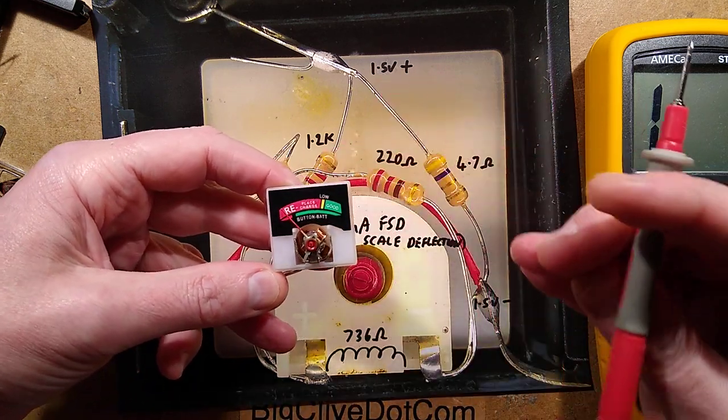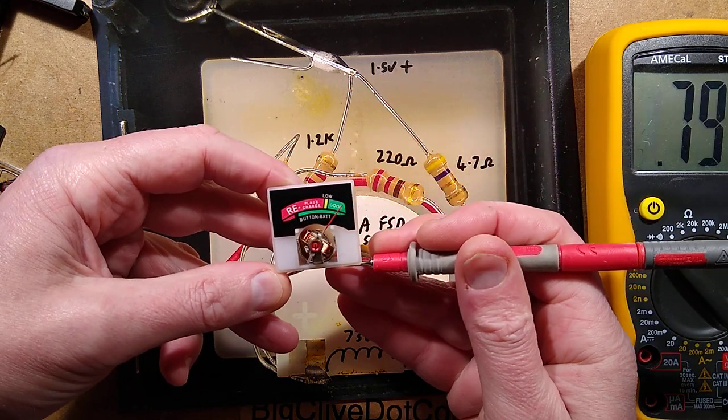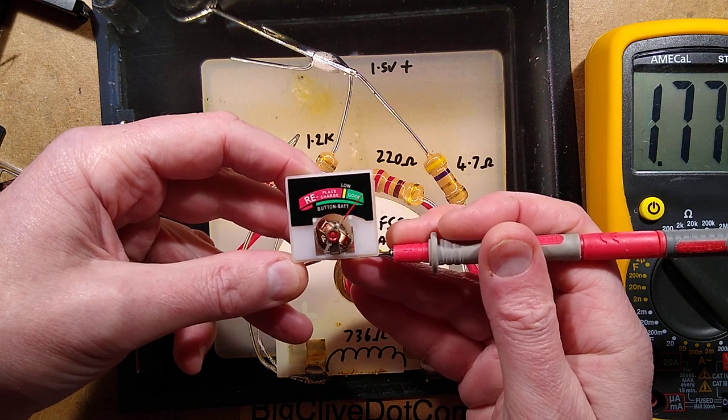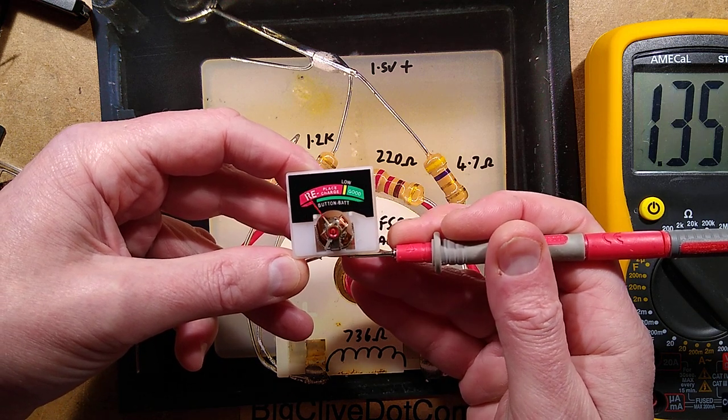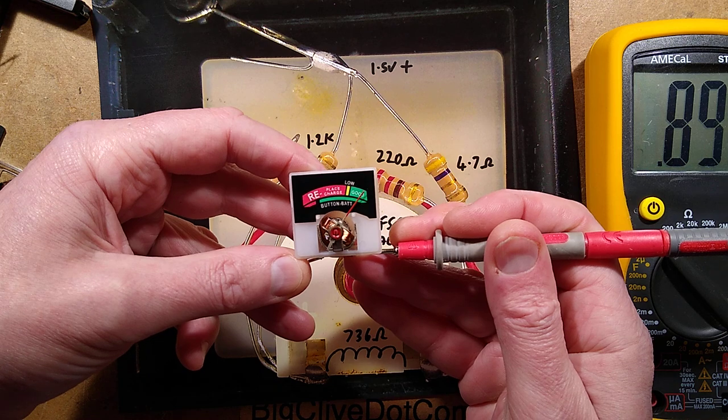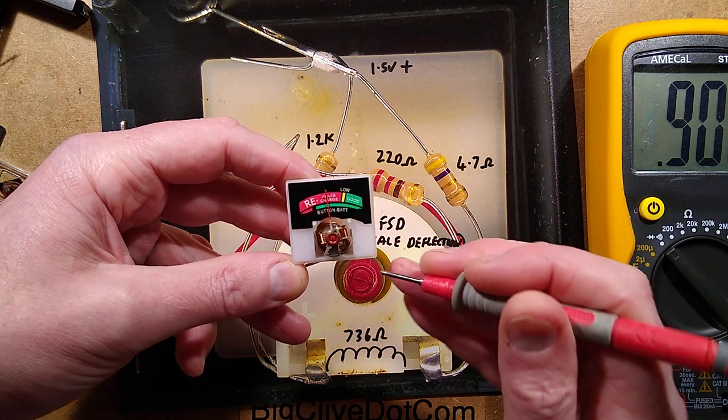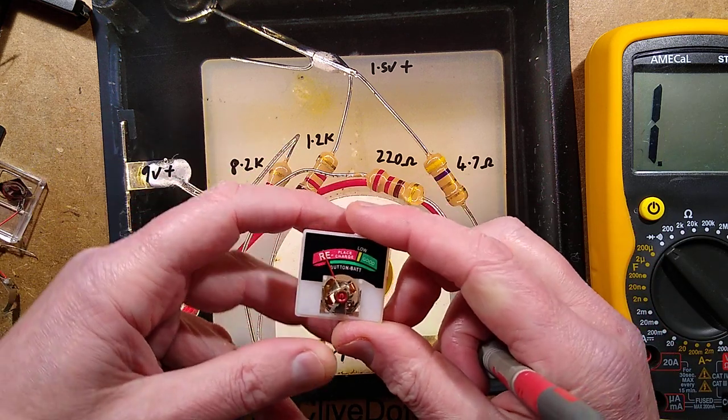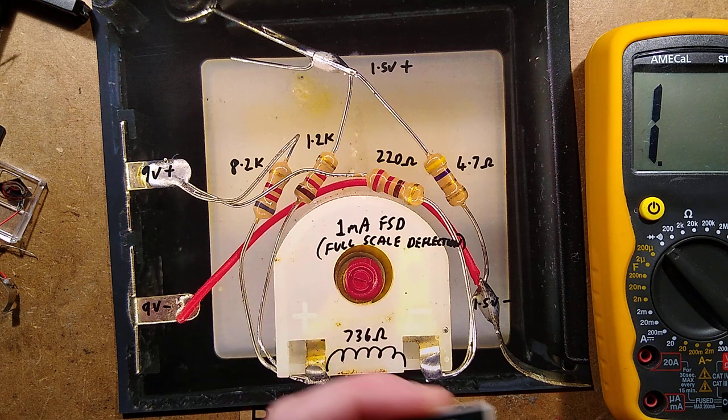And pass the 1 milliamp through in the other direction. And you can see it's pretty much just with that 1 milliamp that's passing through it, it's just gone up to the end. And that is it at its full scale deflection. Anymore, and it just slams into the end of the limit.